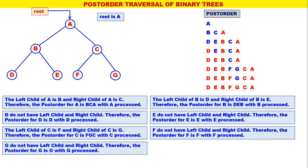Therefore, the post-order for this binary tree is D, E, B, F, G, C, A. I think it is quite simple.